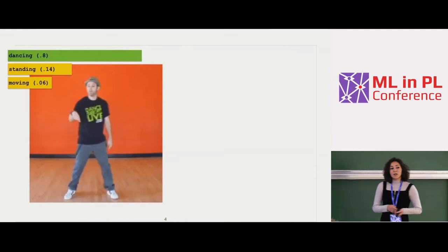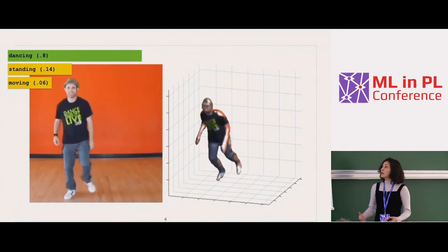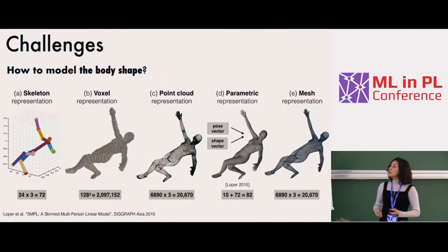Another direction is the lower-level task of looking at the 3D configuration of the human body shape — where the arms are — and this is pose estimation for the human body.